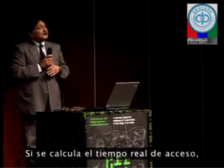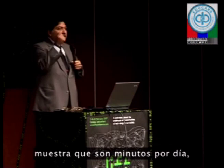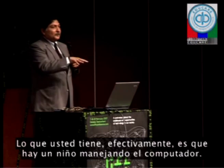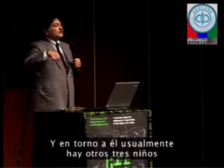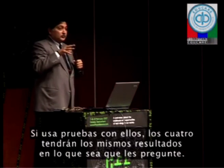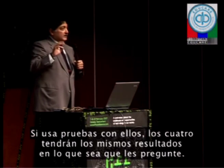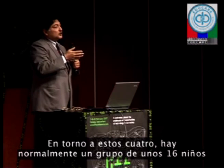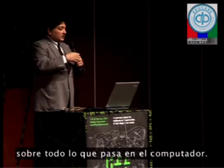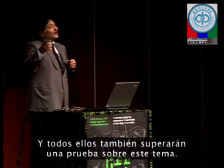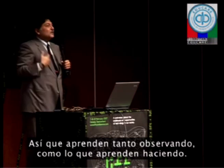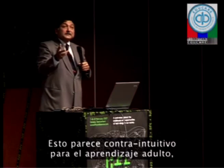How do they do that? If you calculate the actual time of access it works out to minutes per day, so that's not how it's happening. What you actually have is one child operating the computer with usually three other children surrounding him, advising him on what they should do. If you test them, all four get the same scores. Around those four are usually a group of about sixteen children also advising — usually wrongly — about everything going on on the computer, and all of them also clear a test given on that subject. So they are learning as much by watching as by doing.